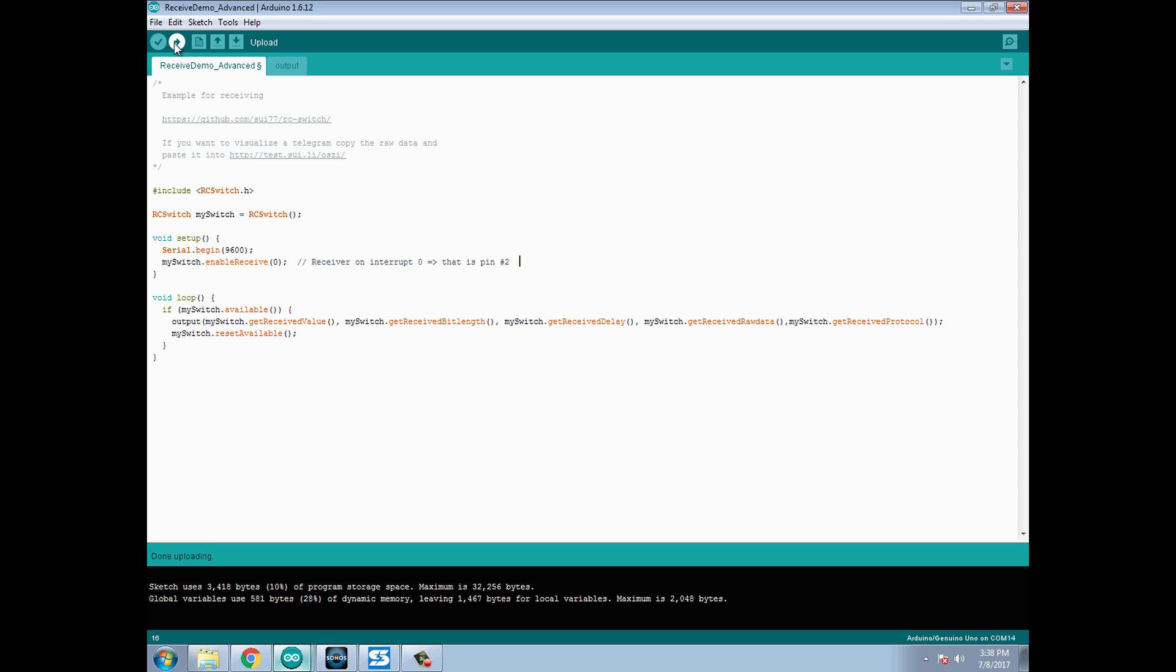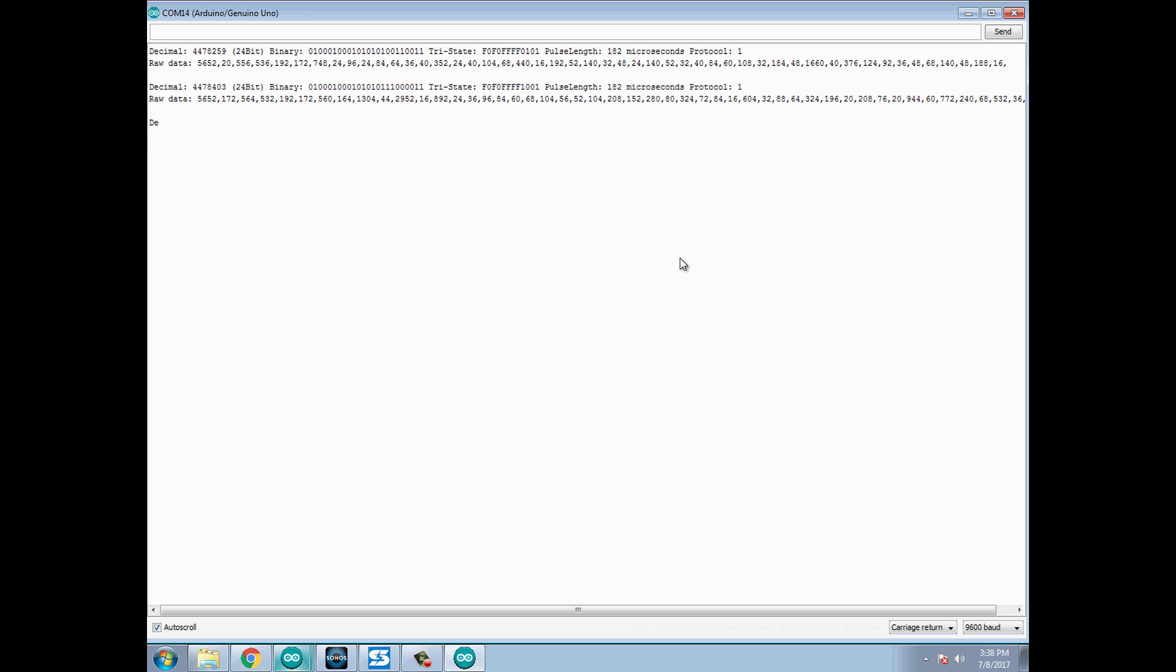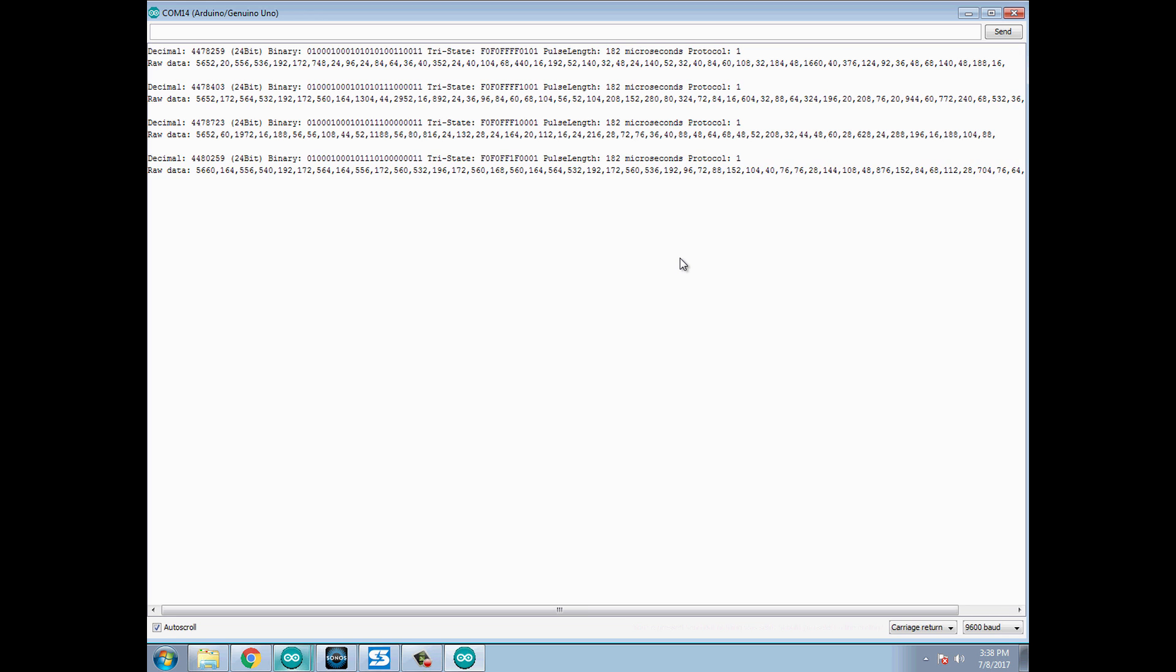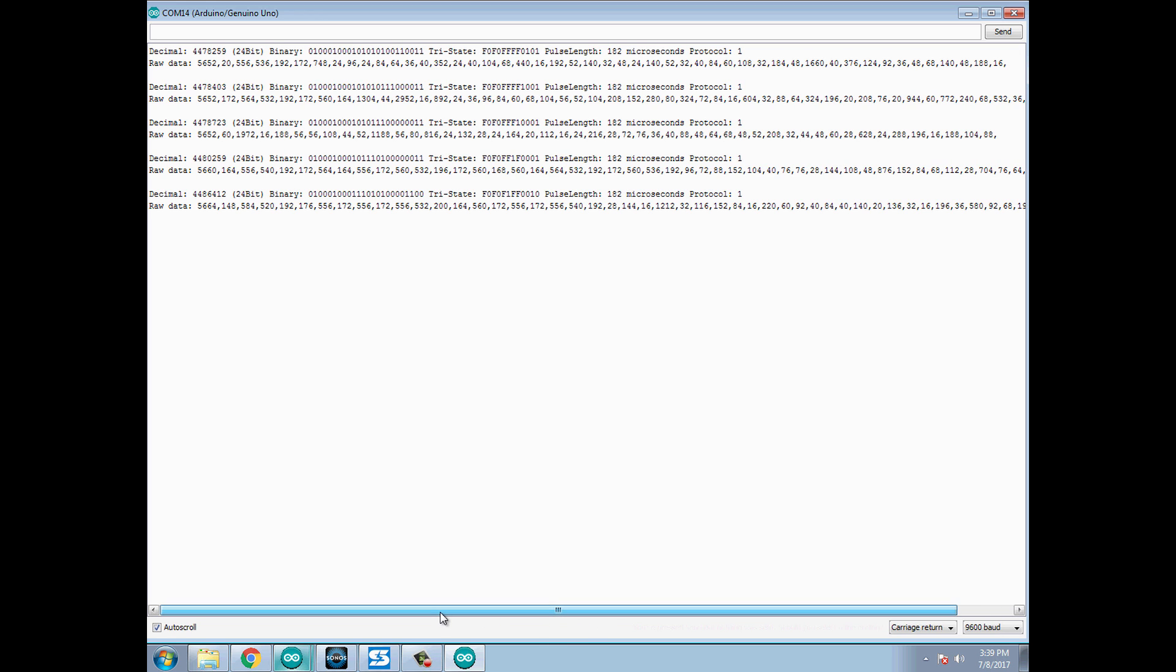The first thing you need to do is just go ahead and upload that to your Arduino, and then once that's done just open the serial monitor. From here you just need to press buttons on your remote. So I'm going to press on and then there is a value. If I keep pressing different buttons you can see different values pop up here in the terminal.